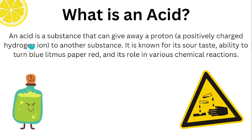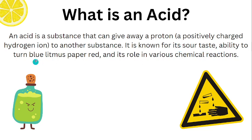What is an acid? An acid is a substance that can give away a proton, which is a positively charged hydrogen ion, to another substance. It is known for its sour taste, ability to turn blue litmus paper red, and its role in various chemical reactions.